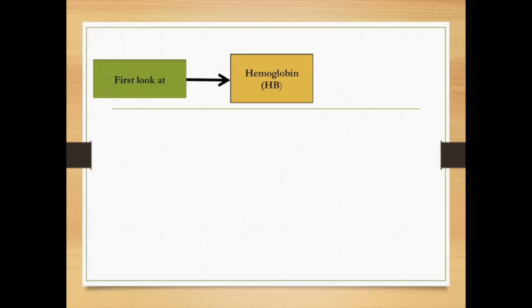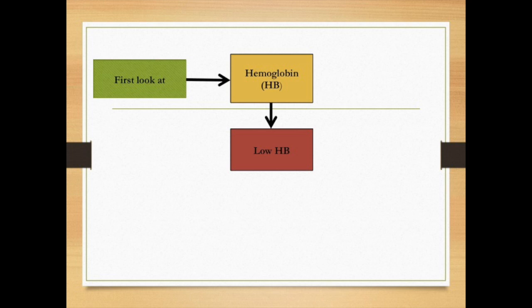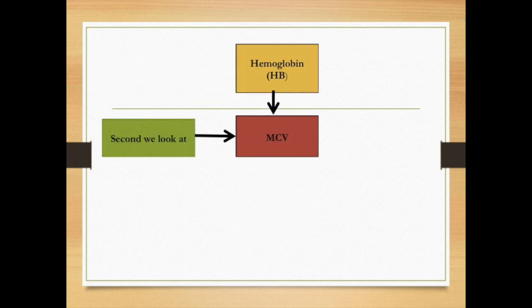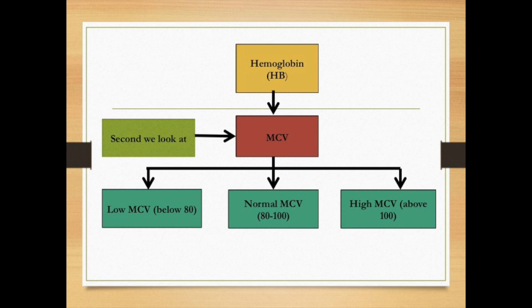In any type of anemia, from a medical perspective, the very first thing to look at in the lab result is hemoglobin. If the lab result shows a low amount of hemoglobin, then we are dealing with anemia. Once we identify it as anemia, we then look at the MCV — never look at the MCV before the hemoglobin.